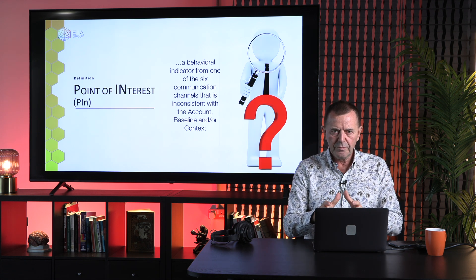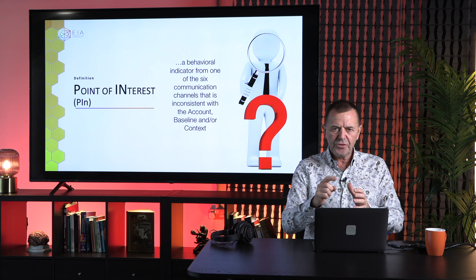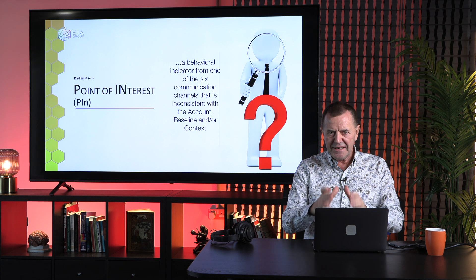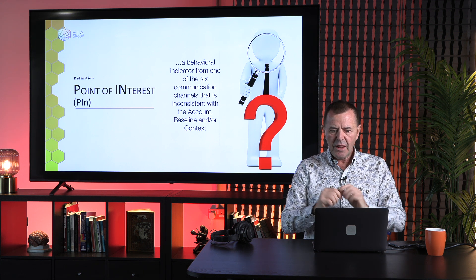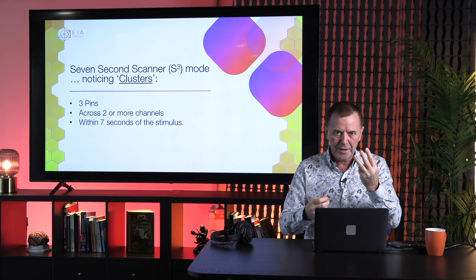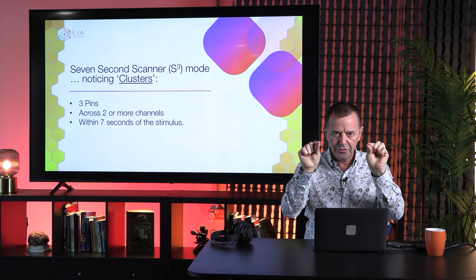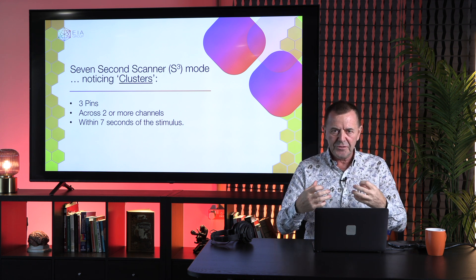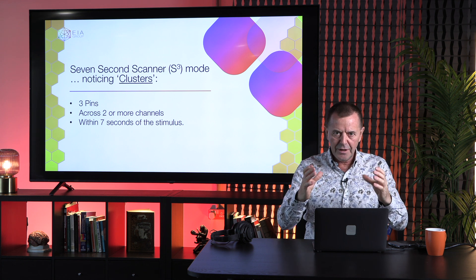Let's define the PIN because it's important. A PIN — point of interest — is a behavioral indicator from one of the six communication channels that is inconsistent with the account, the baseline, or the context. There's no single indicator of deception, so one PIN isn't good enough. We pay no heed to one PIN because it happens all the time when people are telling the truth. If you get two pins, push it aside — the research tells us that's not enough to make a judgment on veracity. But if you get three pins across two or more channels within seven seconds from a stimulus, then research and practice tell us you can be highly confident that deception is at play.